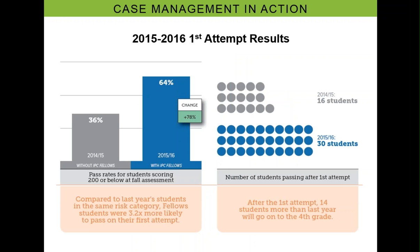We just received the results for the 2015-2016 first attempt. The percent of students identified as at risk who passed the reading gate on their first attempt almost doubled from the year before. Last year, with less coordination and piecemeal programming, 36% of those students who scored below 200 passed the reading gate on their first attempt. This year, 64% of those most at-risk students passed. We're also now using these results to plan for next year and possibly expand the program for first and second graders, now that we know it's an effective model for moving kids.